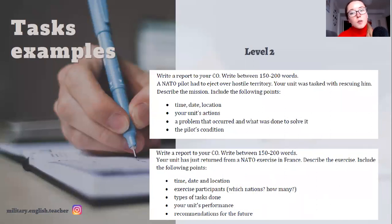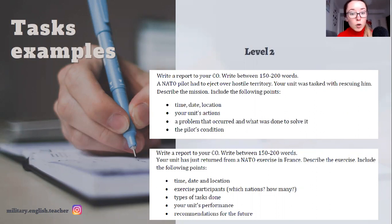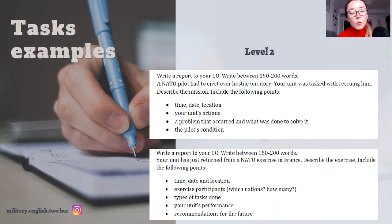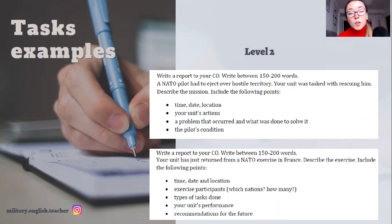Let's analyze some examples of level two tasks. You're asked to write a report to your commanding officer: a NATO pilot had to eject over hostile territory, your unit was tasked with rescuing him. Describe the mission including time, date, location, your unit's actions, a problem that occurred and what was done to solve it, and the pilot's condition. As you can see, you're supposed to talk about a concrete situation and describe different details. When working on that report, remember to check at the end that you fulfilled all the tasks and included all the information — for example, if you wrote about time and date but forgot the location, make sure all parts are covered.